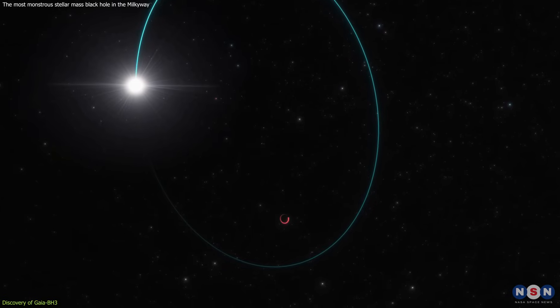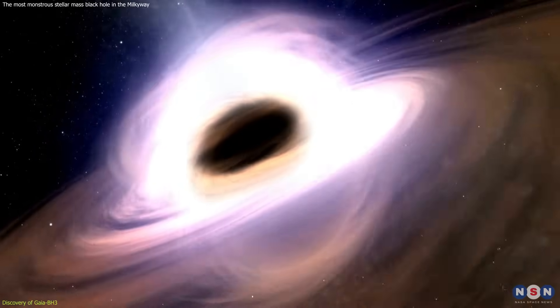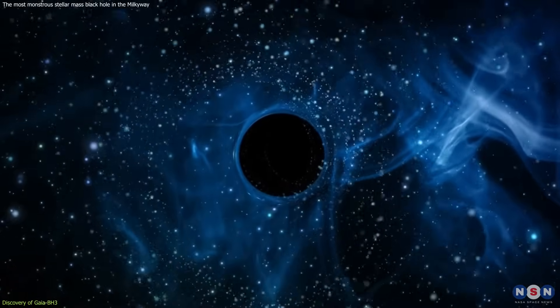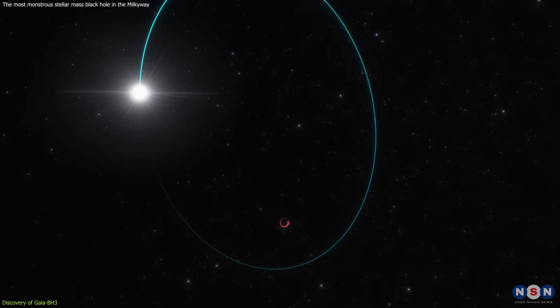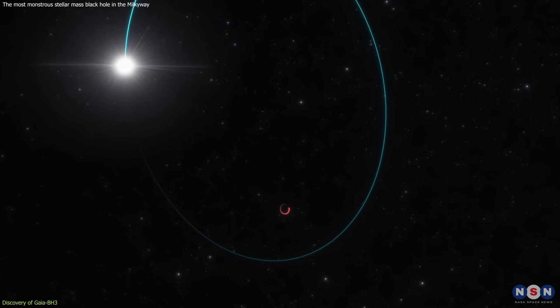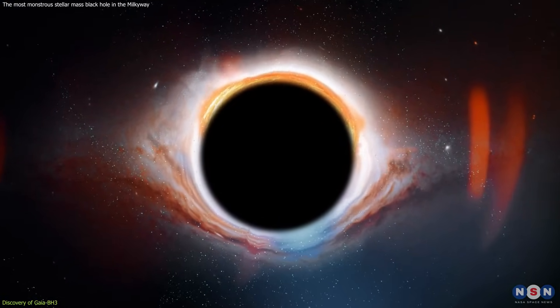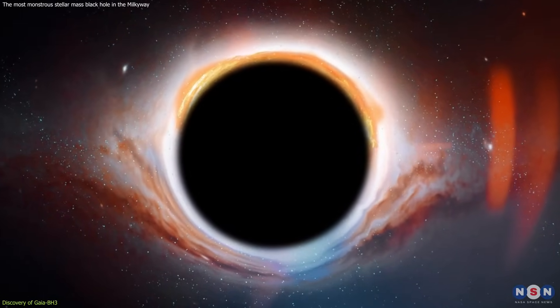This discovery is significant for several reasons. Firstly, the traditional method of spotting black holes involves observing X-rays emitted from material being accreted onto the black hole. However, Gaia BH3 does not conform to this norm. It is what astronomers call a dormant black hole, one that does not currently accrete matter and thus does not emit X-rays.